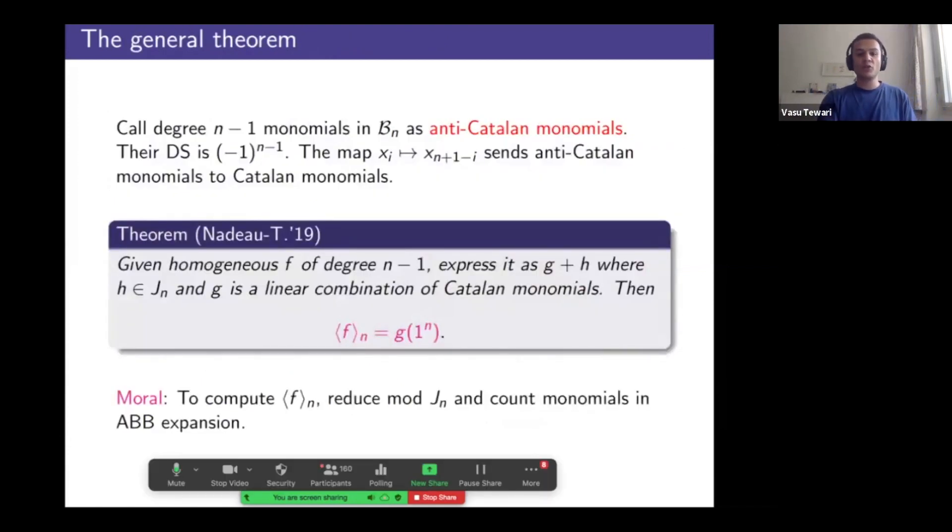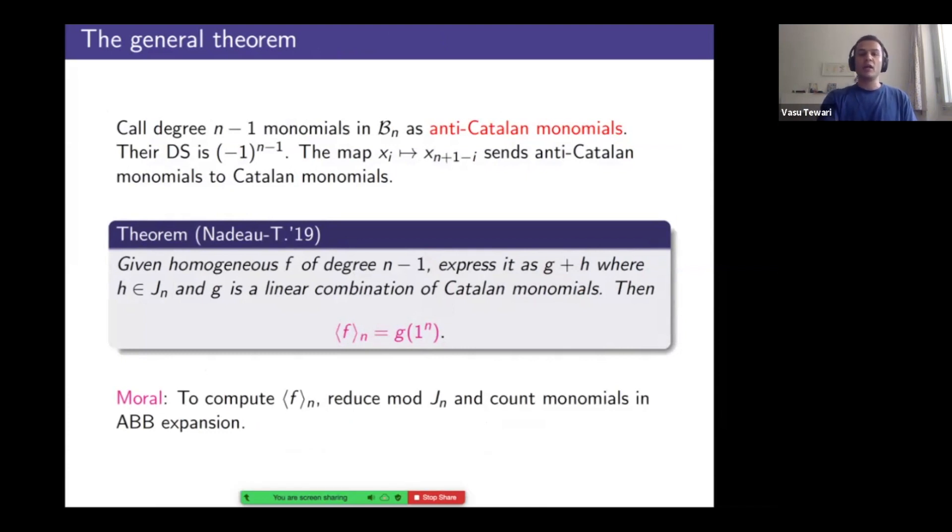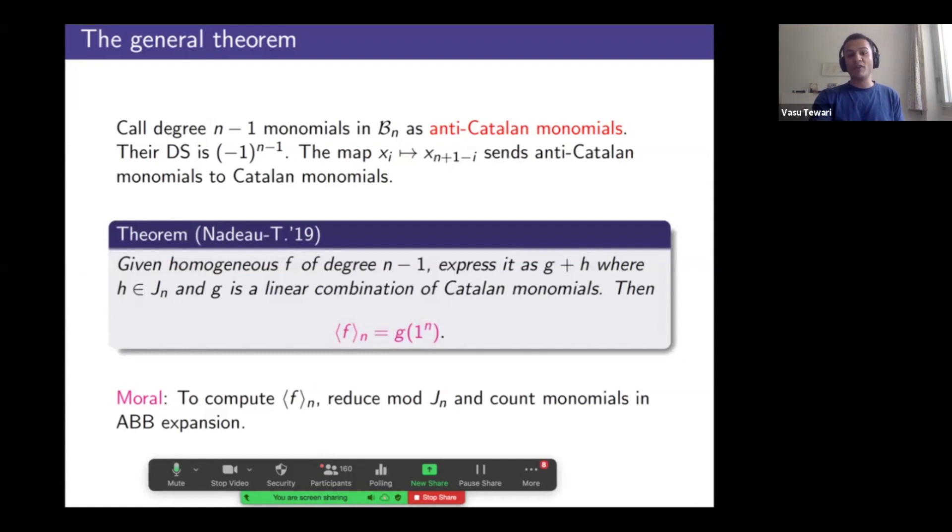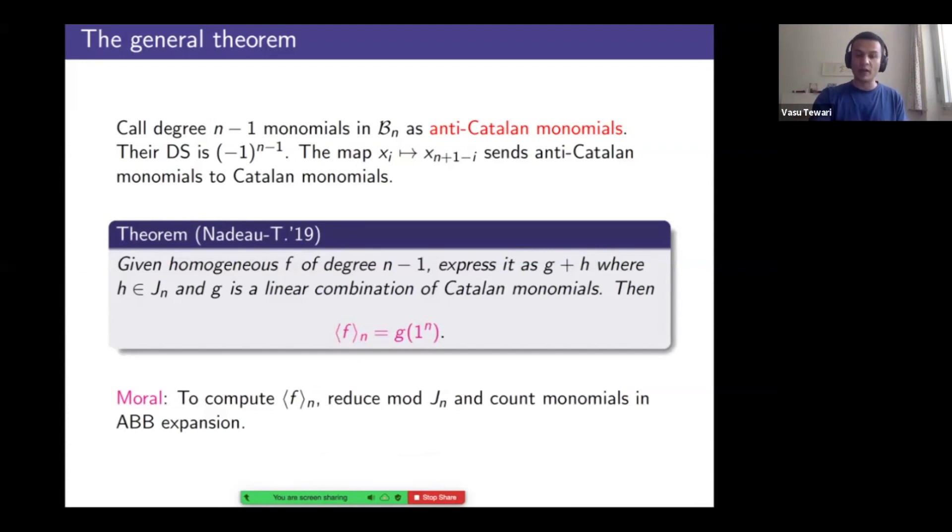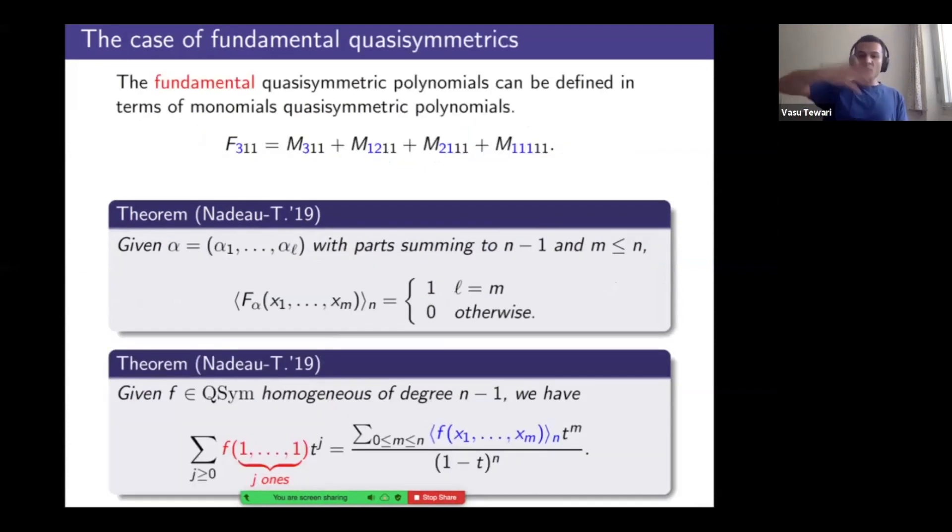Right. So here's our result. Those degree n minus one monomials, which do not cross the diagonal, I call them anti-Catalan monomials. And how do they relate to the Catalan ones from before? Just reverse the order of variables. And that's what you get. And then we have this result which says, if you were to hand me an arbitrary polynomial of degree n minus one, I will write it as a sum, take away all the things that lie in the quasi-symmetric ideal and express the rest in this Aval-Bergeron-Bergeron basis. Then divided symmetrization is the all ones evaluation. All you're left to do is compute the normal form of a polynomial and count monomials. So this is why the all ones evaluation were showing up earlier as well.